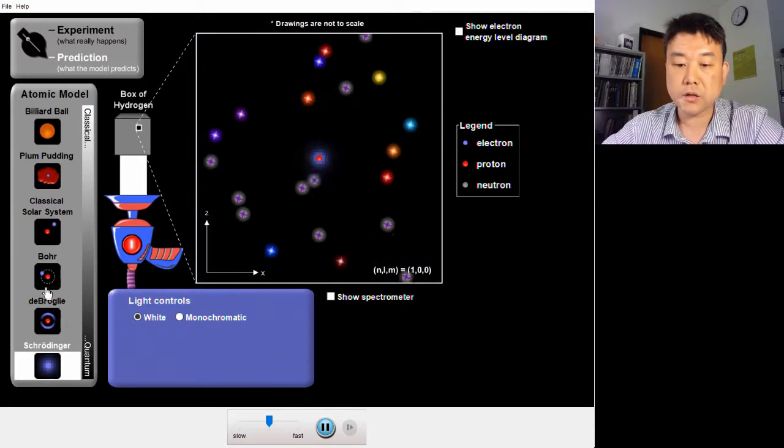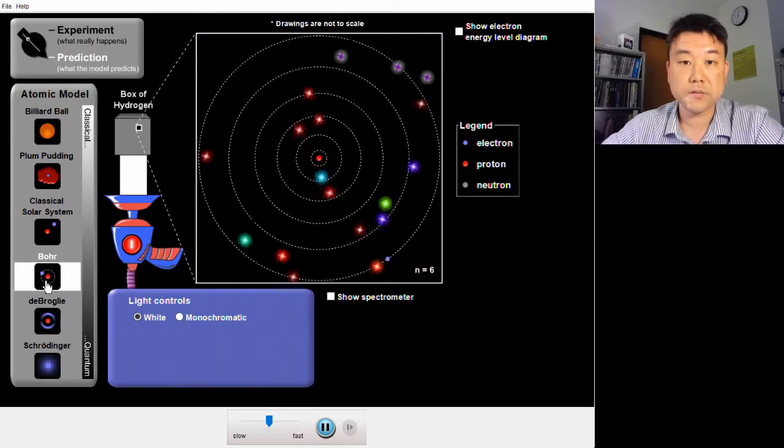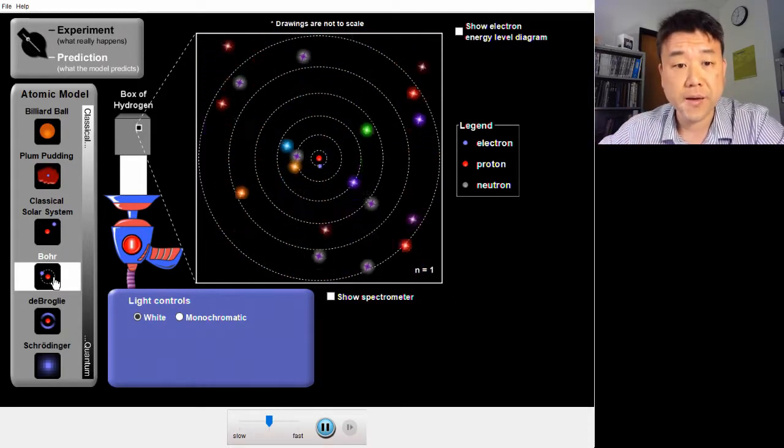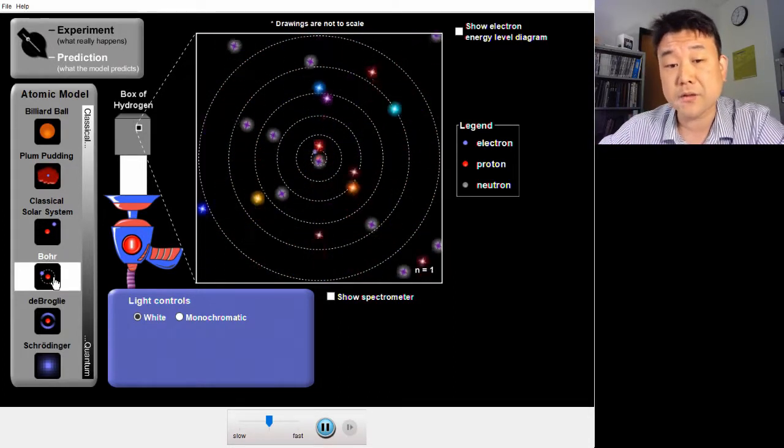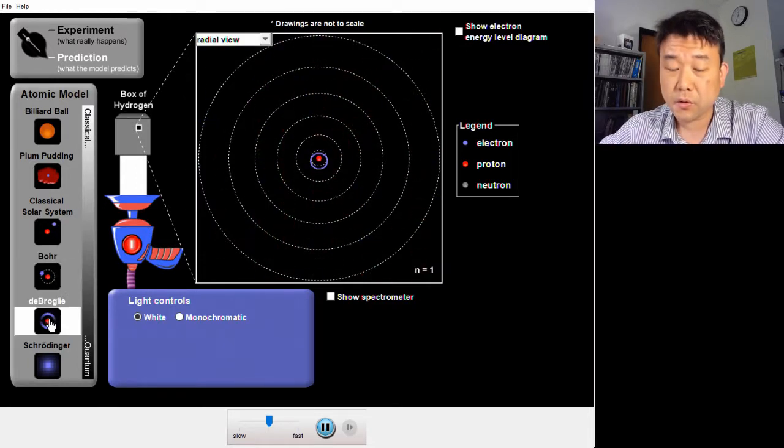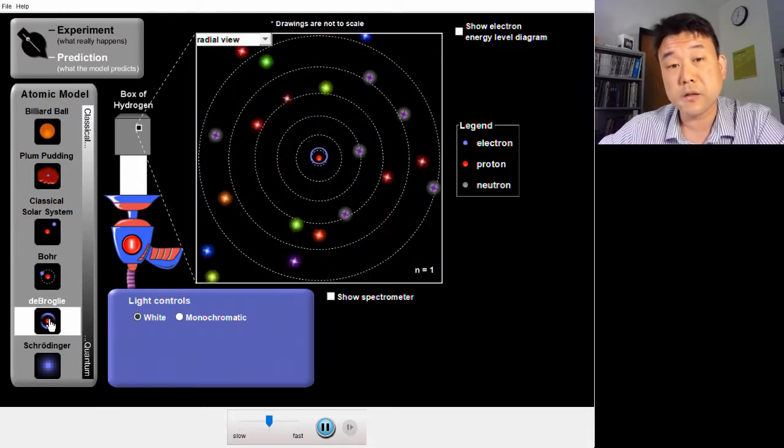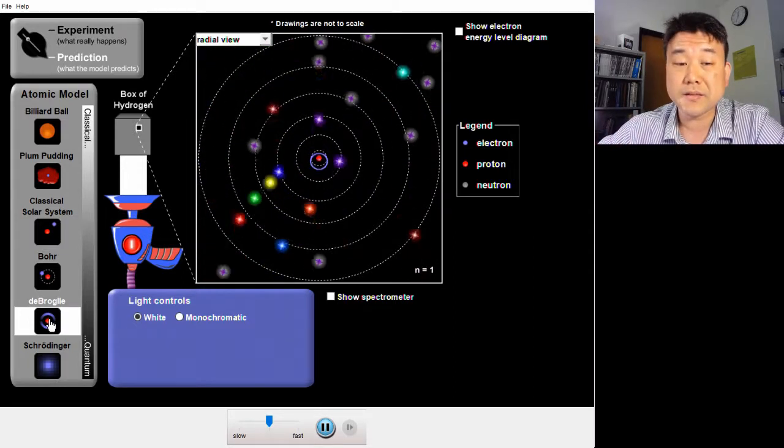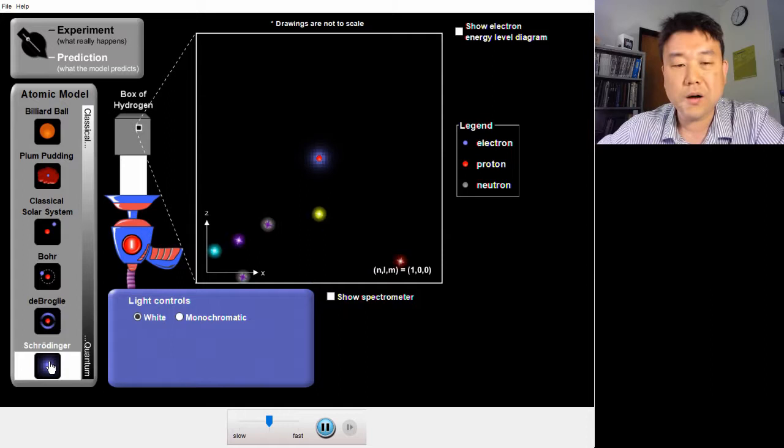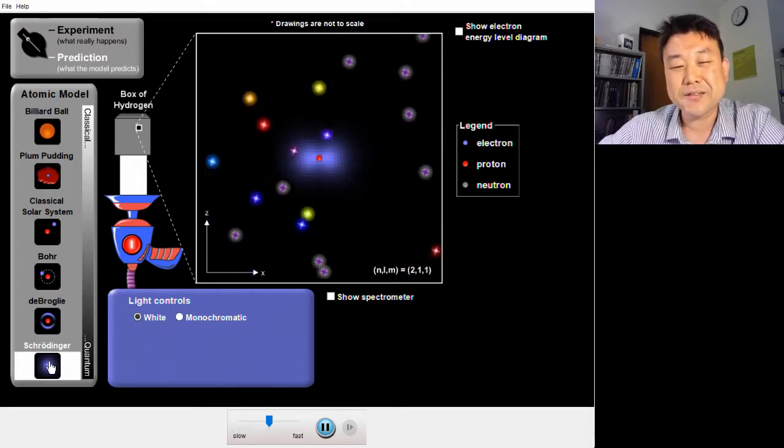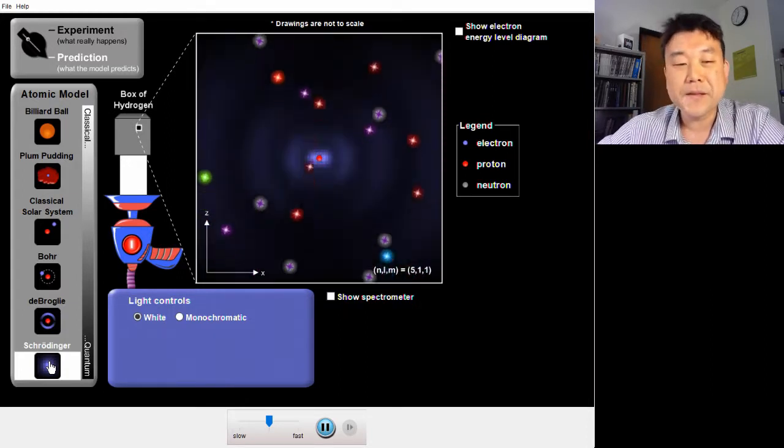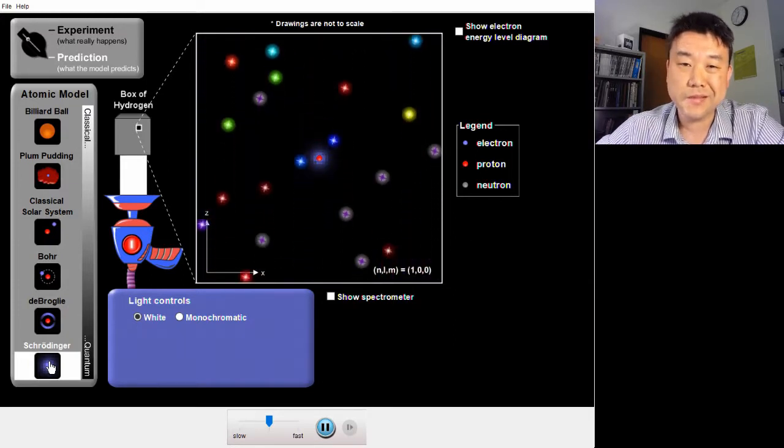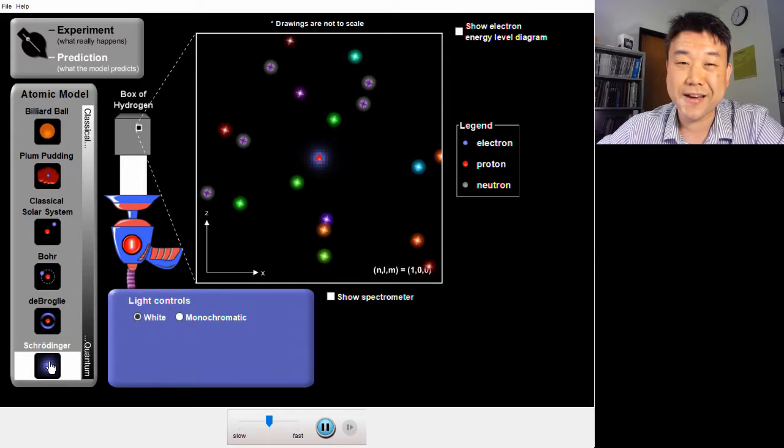We will definitely discuss the Bohr model by the end of the semester. I think it's intuitive enough without a lot of math. Especially if we have a little bit of time to spend on it. And we'll possibly even go into a little bit into De Broglie model, which hints at the weirdness of quantum mechanics. But we won't cover the Schrodinger model. Because to get something from this model, you need to know something about differential equations. That's covered in classes that you take after calculus.